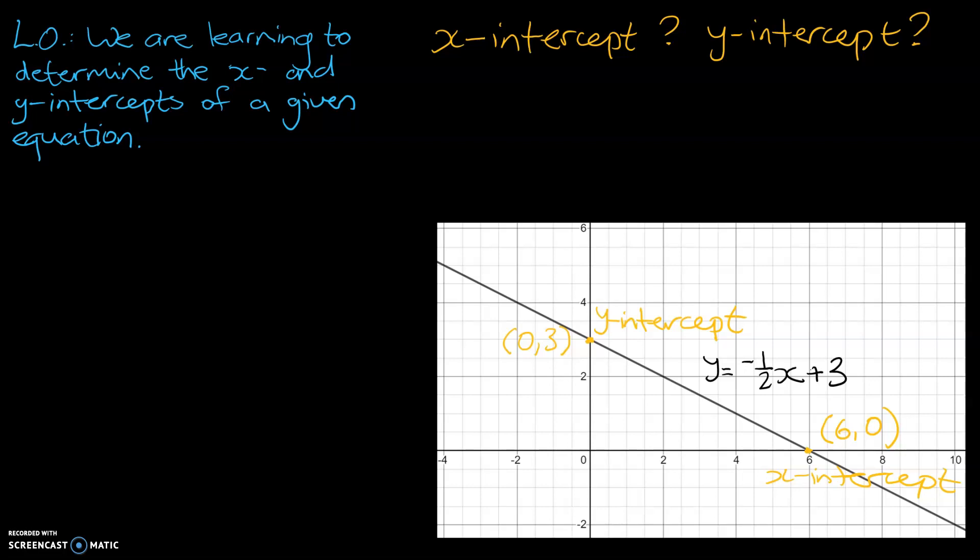So at the x-intercept, what we know is at any point along the x-axis, any point that touches that line, the corresponding y-value is always going to be 0.